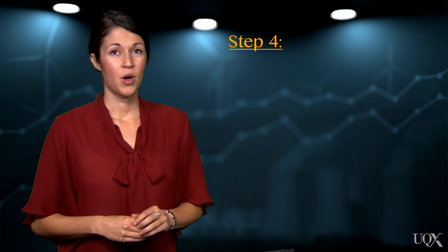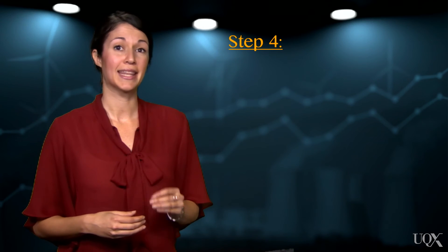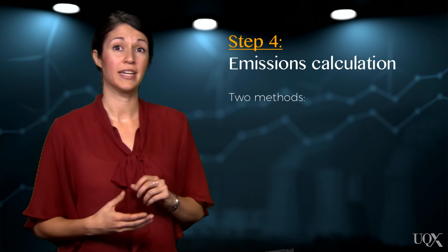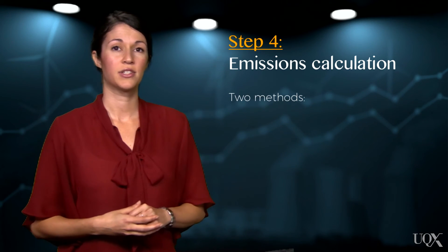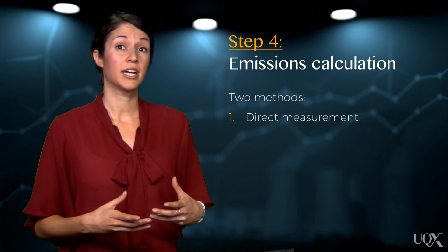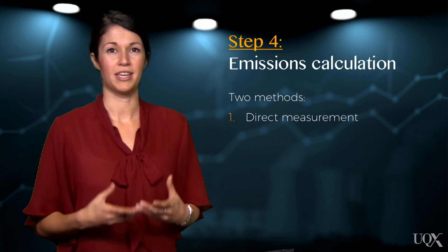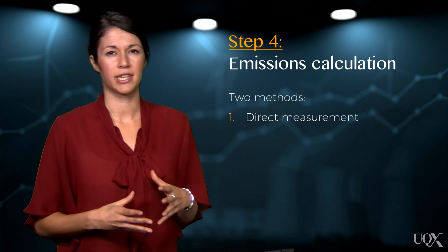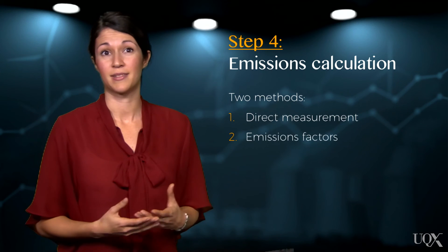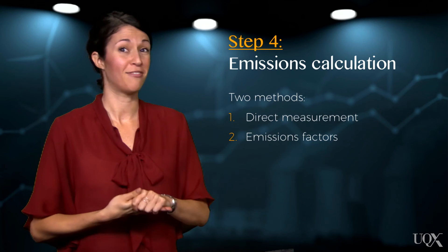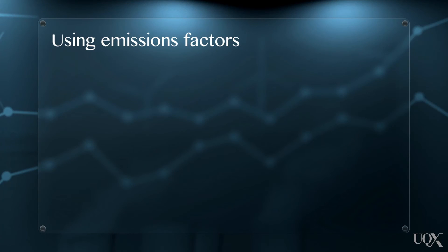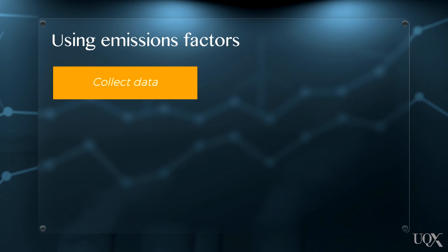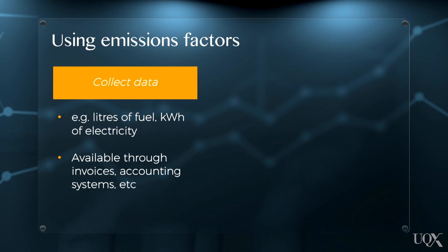Now, step 4. Once an organisation knows which facilities and emission sources it will include in its carbon footprint, it can then calculate the emissions from each. There are two ways an organisation can do this. The first is through direct measurement — for example, a large organisation may use measuring equipment to determine the exact amount of carbon dioxide and methane coming from the flue stack of a power plant. For a smaller organisation, the more appropriate method would be to use emission factors. This method is by far the most commonly used. Under this method, an organisation would collect input data such as litres of fuel or kilowatt hours of electricity used, which is often readily available through invoices and accounting systems.